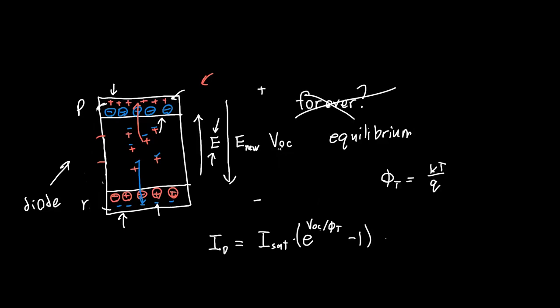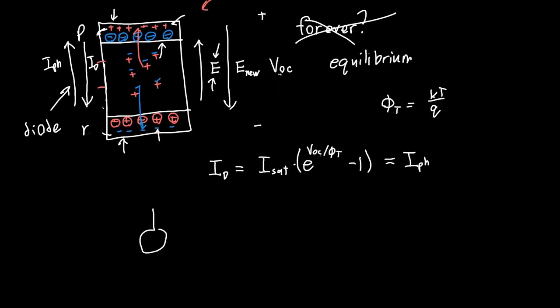And so at equilibrium, this current, the current flowing through the diode in this direction, is just equal to the photocurrent. So the generated, the current from all these generated electron hole pairs. So the photocurrent and the diode current. And electrically, we can just model this as a current source. So some photocurrent in parallel with a diode.